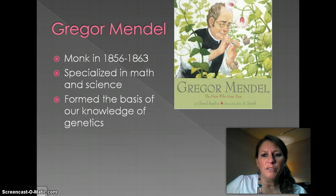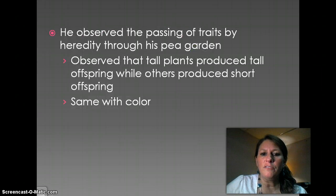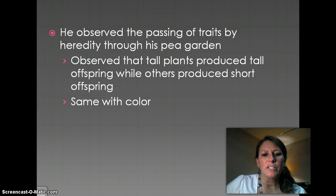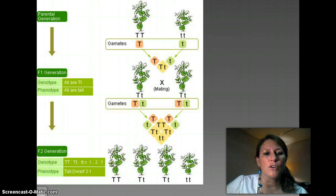Two scientists you need to be familiar with for this unit. The first one is Gregor Mendel, and he is known as the father of genetics. He did all of his observations on the garden pea plant, and he really focused on seven traits. We talk a lot about the tall and the short offspring, so I will reference the height of the plants, but he had seven traits that he focused on.